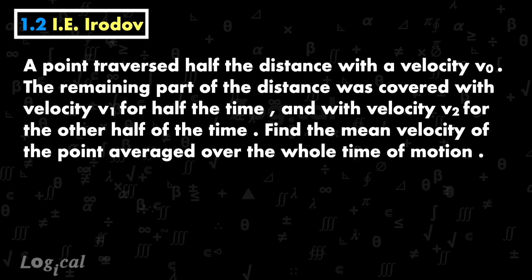The question is: a point traversed half the distance with the velocity v0. The remaining part of the distance was covered with velocity v1 for half the time and with velocity v2 for the other half of the time. Find the mean velocity of the point averaged over the whole time of motion.